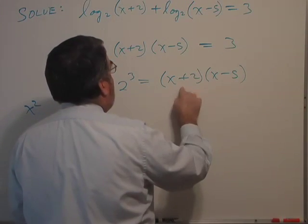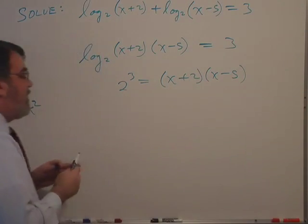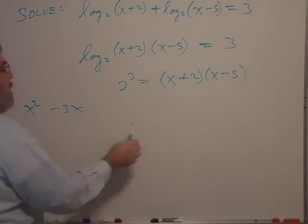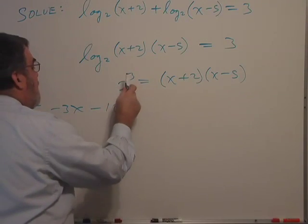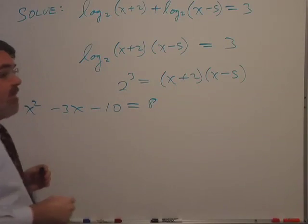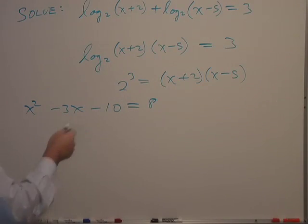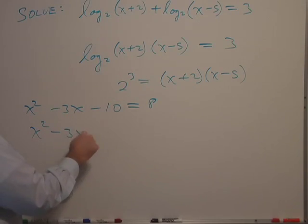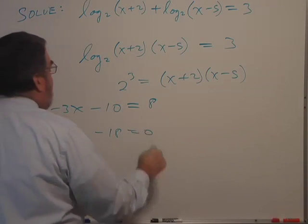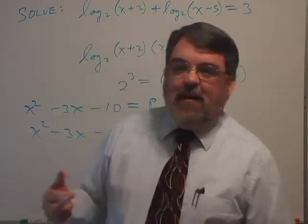We have -5x and +2x, which makes -3x, and then -10 equals 8. 2 to the third is 8. Now let's subtract 8 from both sides, so I have x squared minus 3x minus 18 equals 0. So that puts it in position to factor.